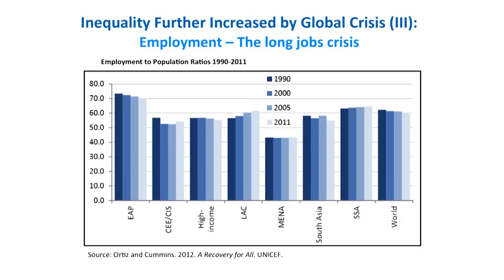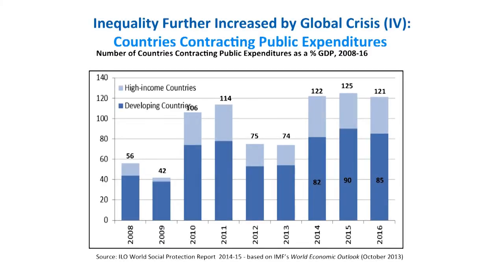We are experiencing a long job crisis — not a short one. The crisis has worsened that tendency, with the only exception of Latin America, which has been increasing the demand for labor. The rest of regions have experienced a long decline since 1990. A number of countries are contracting public expenditures. This year, according to IMF fiscal projections, 122 countries are contracting public expenditures, of which 82 are developing countries — so it's not only a European phenomenon.